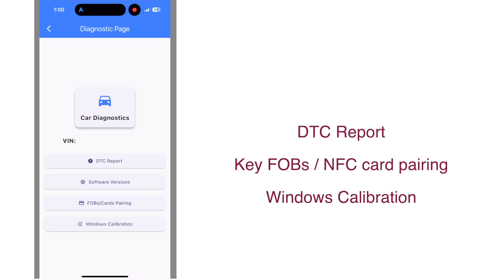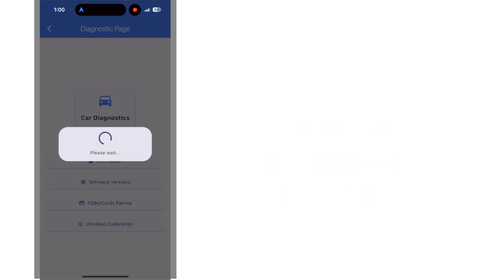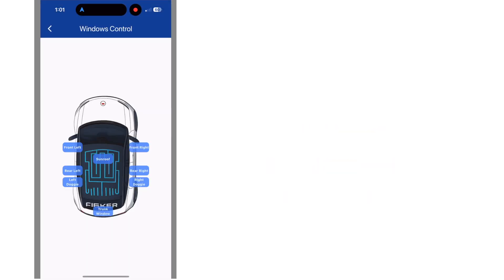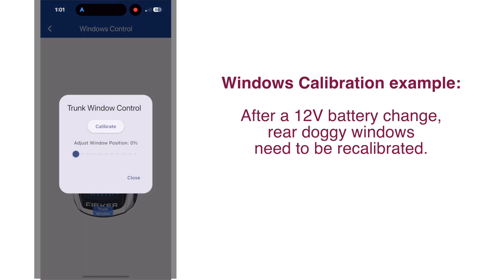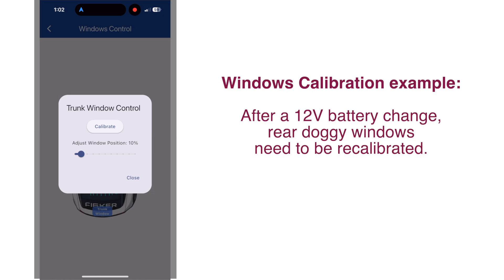Now going back to the car Diagnostics page — this is a section of the app dedicated to key fob and NFC card pairing, and also window calibration. If any of the windows of your vehicle need to be recalibrated, this section of the app will be very useful to adjust windows individually on the vehicle.